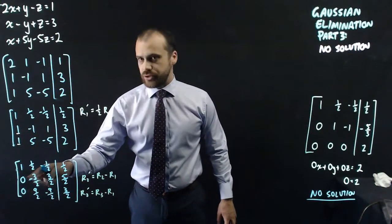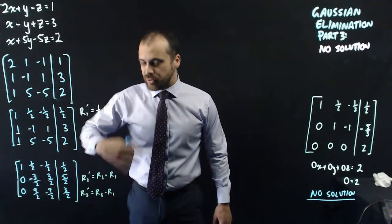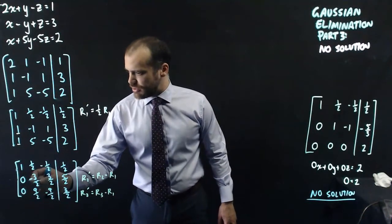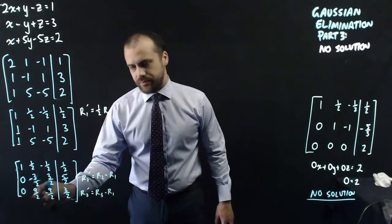I'm going to take these rows, row two and row three, and multiply them by a scalar, so that that becomes the number one, and that becomes the number one.